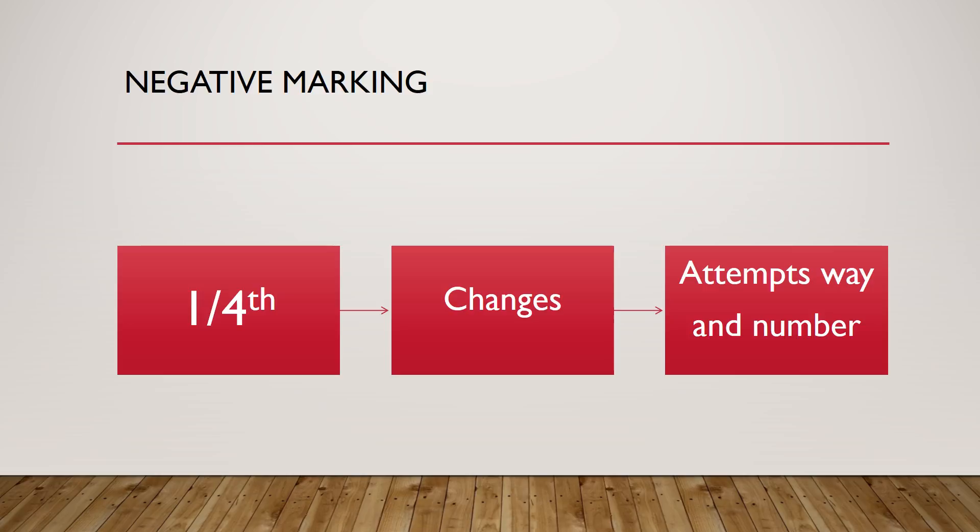How does introduction of negative marking change things? If I have got plus 4 marks for a correct answer, they are my source. Negative marking nibbles on that source, gets a drop in your ranks. It will change two things: how to attempt a paper and how many to attempt. Let's look at how first and then how many. They are interconnected, but let me put it into two groups.